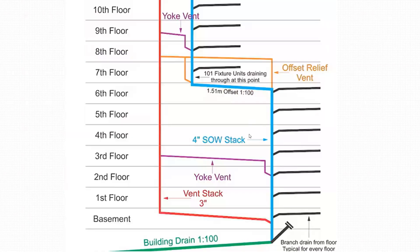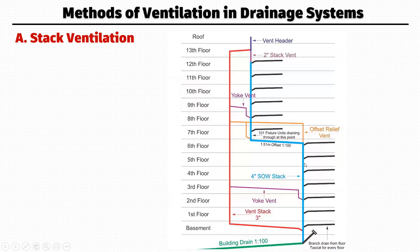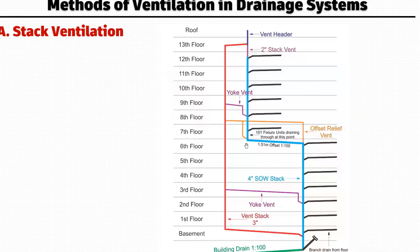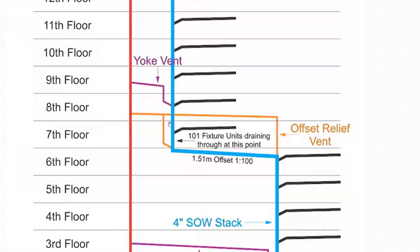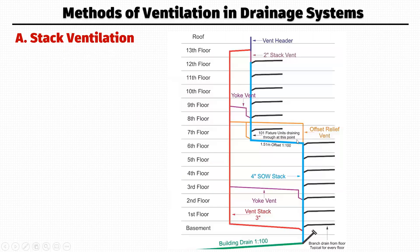Wherever there is an offset in the drainage stack, there will be a high pressure zone, because the waste is bending at 45° and again at 45°, creating a lot of pressure. In that case you must provide an offset relief vent, taking pipe connections at both ends — wherever the offset is starting and wherever it is ending — and connecting them to the vent stack. This is called the offset relief vent.